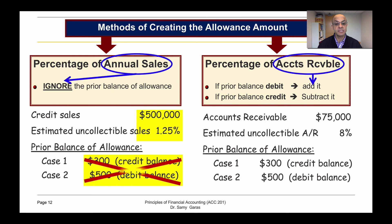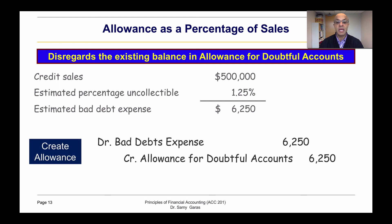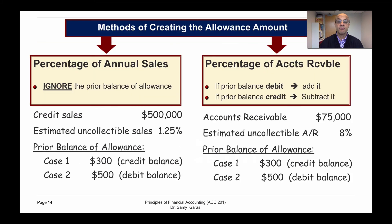If we use annual sales we must ignore the prior balance, so we take the percentage from the sales: we multiply 500,000 times 1.25% and get six thousand two hundred fifty. Here we ignore the prior balance, so we debit bad debt expense and credit allowance for doubtful accounts by six thousand two hundred fifty.